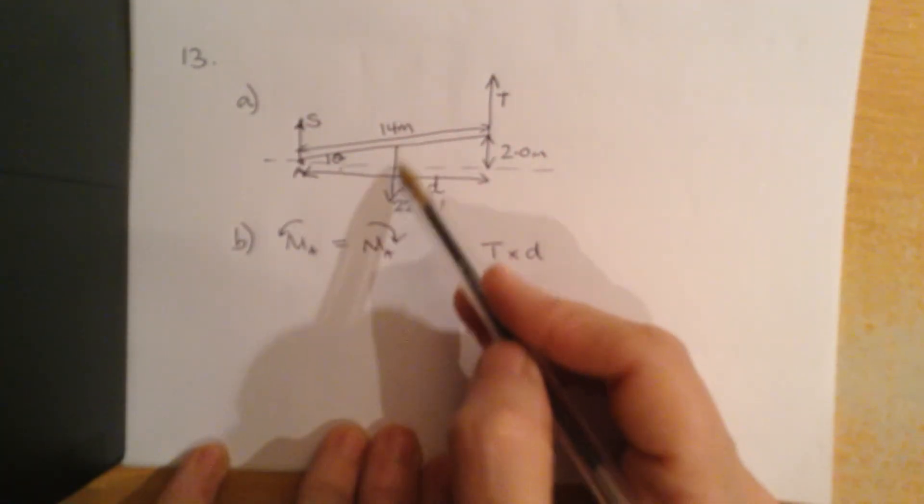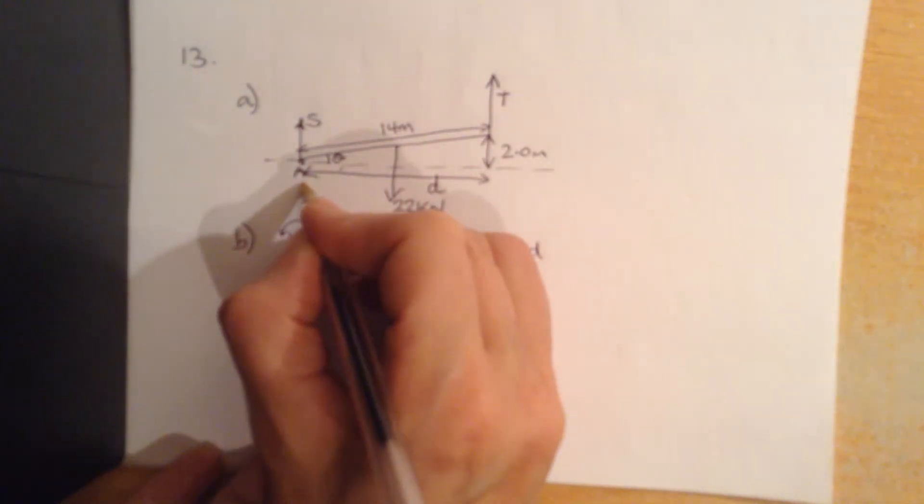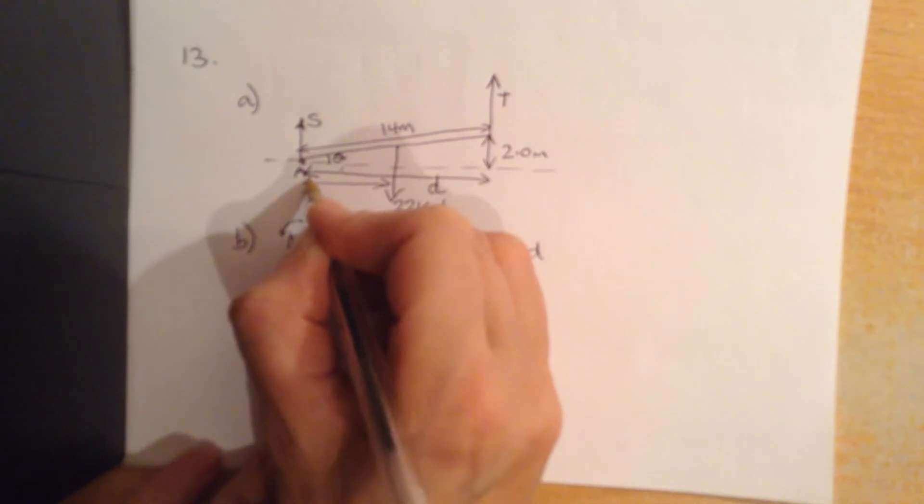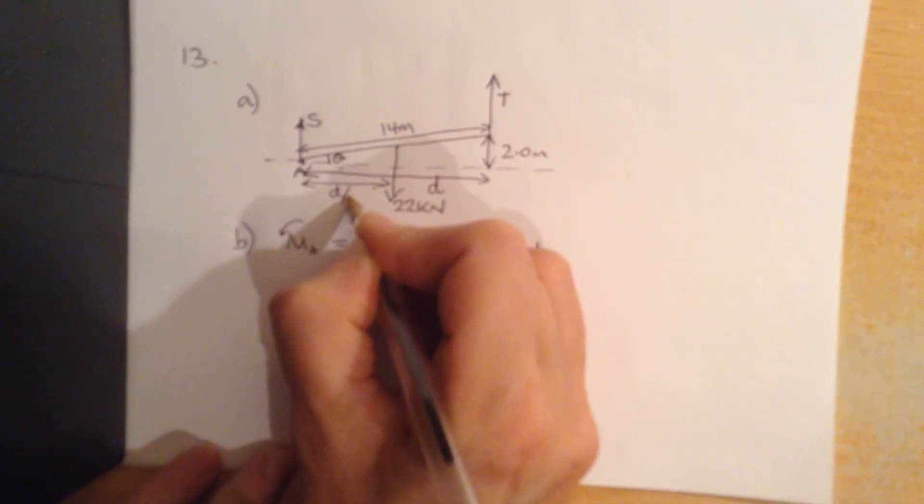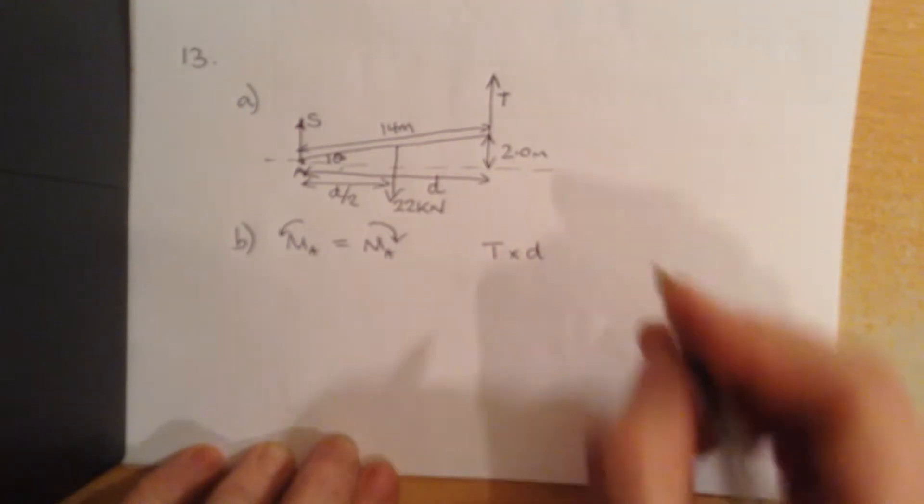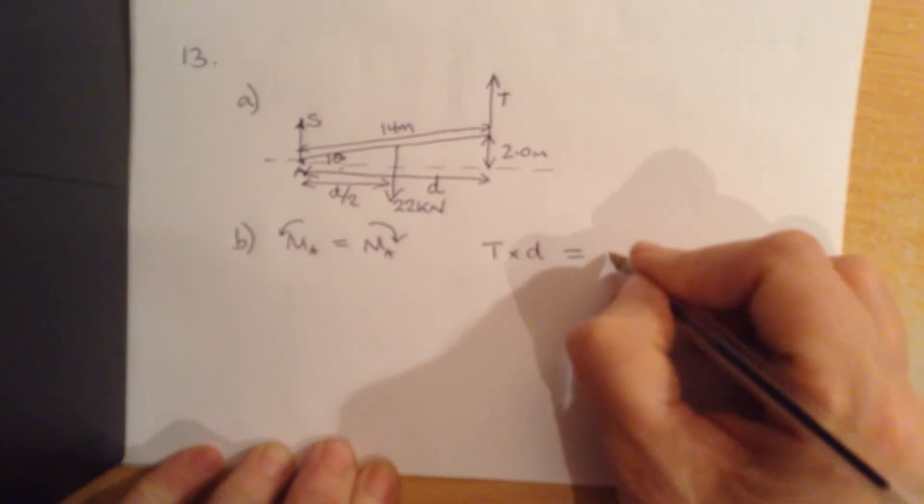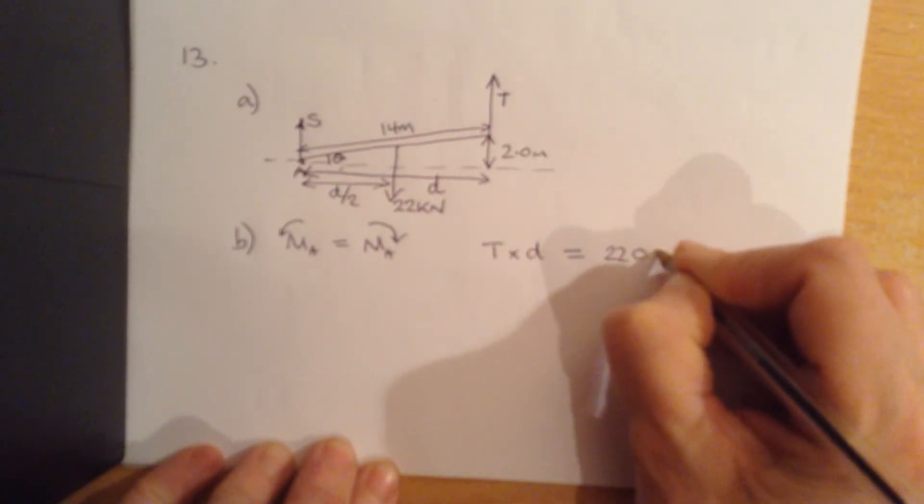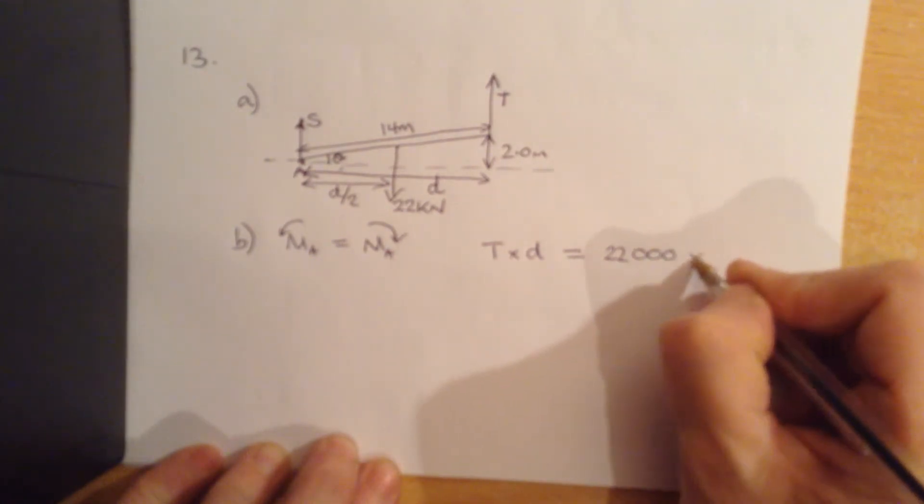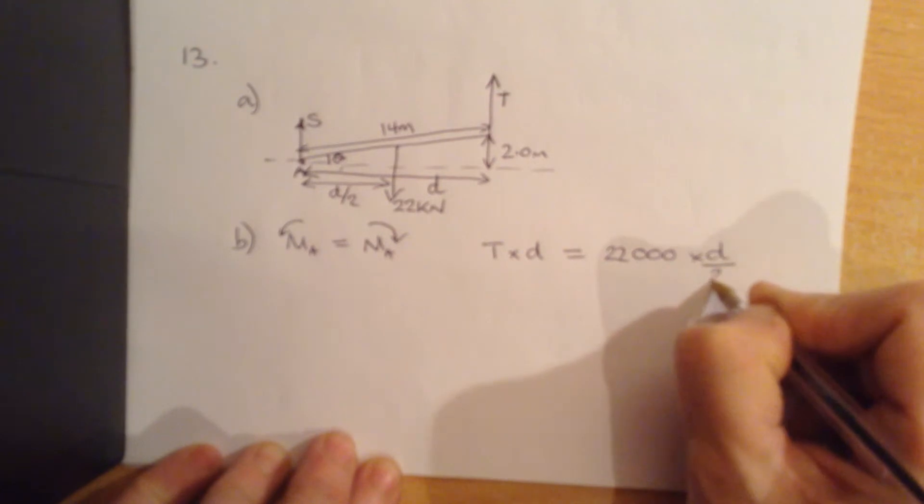Now, the weight acts at this distance here. That is actually going to be d divided by 2. So we could say that is equal to 22 kilonewtons, multiplied by d divided by 2.